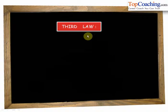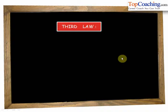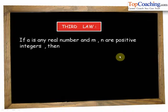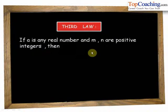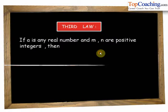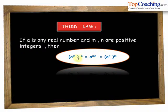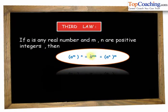The third law of exponents states that if a is any real number and m and n are positive integers, then a to the power of m whole to the power of n is equal to a to the power of m into n.